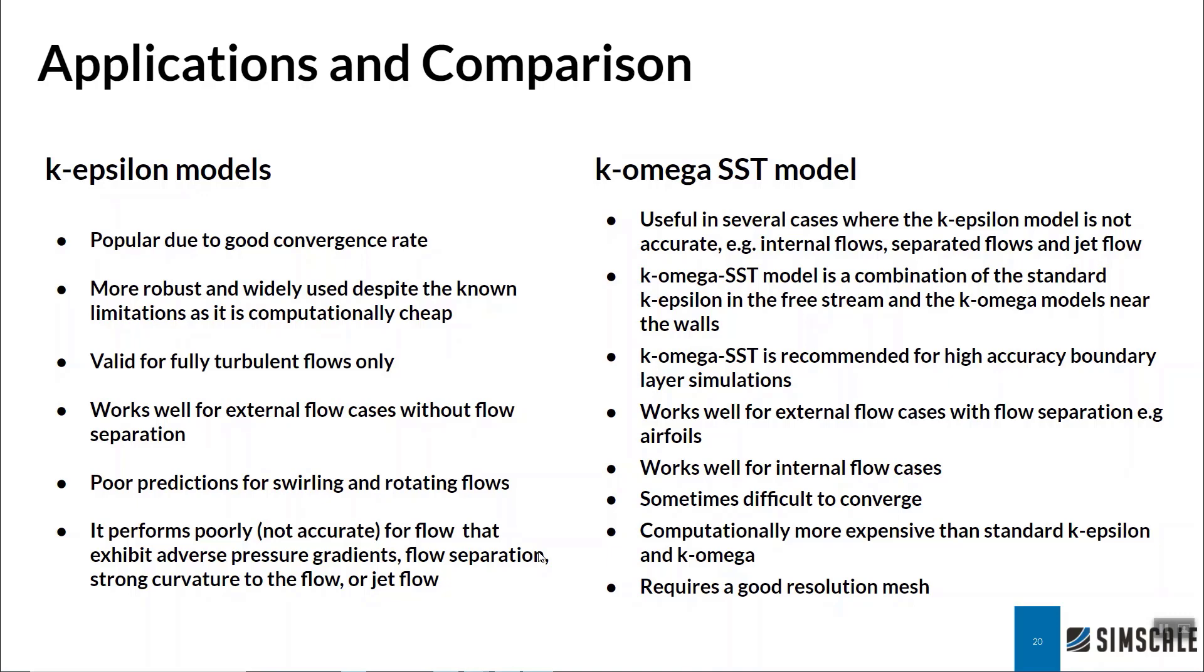Then we have the k-omega SST model, which is a hybrid of the two. Essentially, we combine best of both worlds. We take the k-epsilon in the bulk of the flow, away from all the walls, and we use the k-omega as we approach the wall instead.